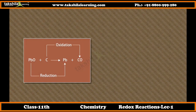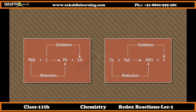In the reaction of PbO and carbon, oxygen is being removed from lead oxide and is being added to carbon. Thus, PbO is reduced while C is oxidized. In the reaction of H2S and Cl2, hydrogen is being removed from hydrogen sulfide and is being added to chlorine. Thus, H2S is oxidized and Cl2 is reduced.